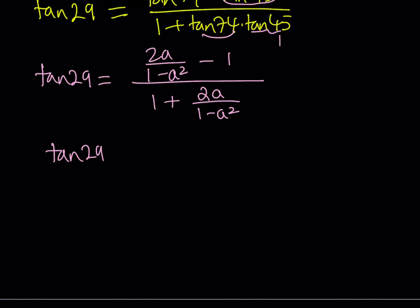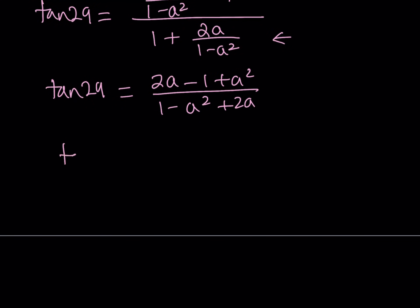Let's go ahead and simplify this. I can make a common denominator here and common denominator here. You're going to notice that the denominators are the same, so they're going to cancel out. So I only need to focus on the top parts. 2a minus 1 plus a squared divided by 1 minus a squared plus 2a. I can just arrange this and write it as a squared plus 2a minus 1 divided by negative a squared plus 2a plus 1. So that is my expression for tangent 29.